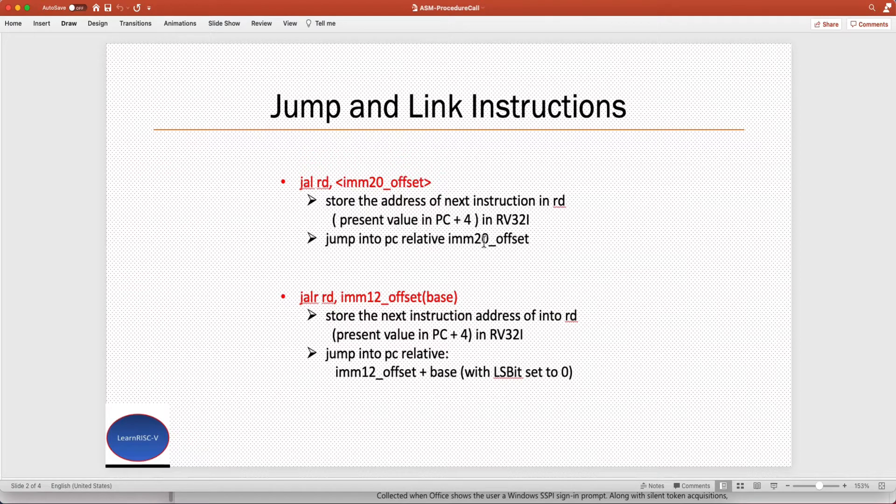The other variant is jump and link register. As the name suggests, the address you can give is a base address in a register. This instruction takes two register operands. As a jump and link, it stores the next address in that destination register.